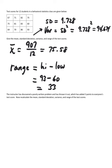Let's move to the bottom part. The instructor has discovered a poorly written problem and has thrown it out, which has added three points to everyone's test score. Now recalculate the mean, standard deviation, variance, and range of the test scores. I just used the calculator for standard deviation and squared that value to get variance. I don't want you guys worrying about using a long formula to calculate these. You can use either the salt from WebAssign or you can use your graphing calculator. I don't want you going through all the long, tedious, doing it by hand process.